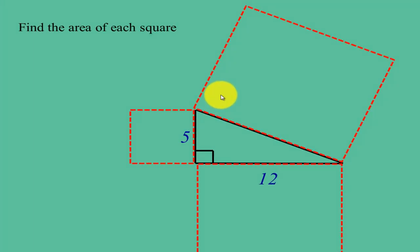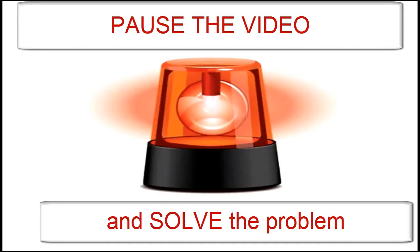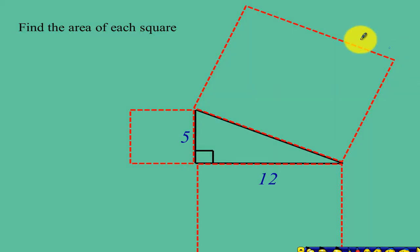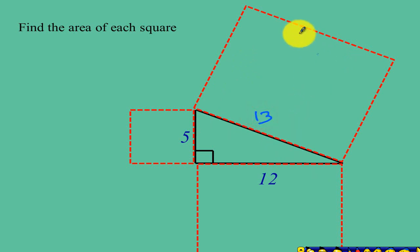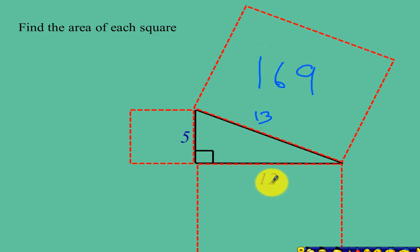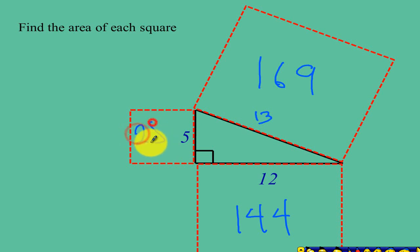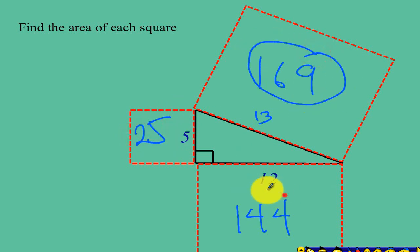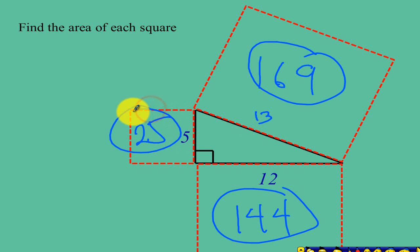Alright, for this problem, I need you to pause the video and find the area of H squared. Using your Pythagorean theorem, the missing side which is the hypotenuse should be equal to 13. So the area for this square should be 13 times 13, which is 169. Here, just multiply 12 by itself: 12 times 12 will be 144. And then 5 times 5, it will be equal to 25. So this is the area of H squared.